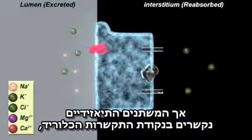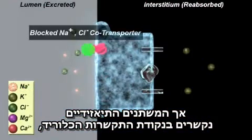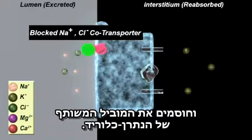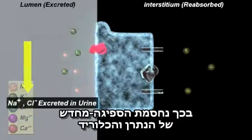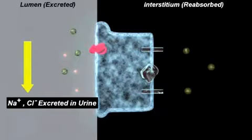However, the thiazide diuretics bind at the chloride binding site and block the sodium chloride cotransporter. This blocks sodium and chloride reabsorption, resulting in net excretion of sodium and chloride.